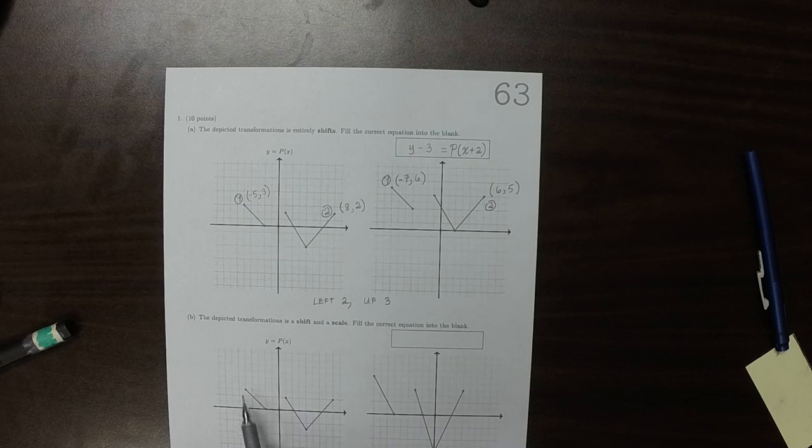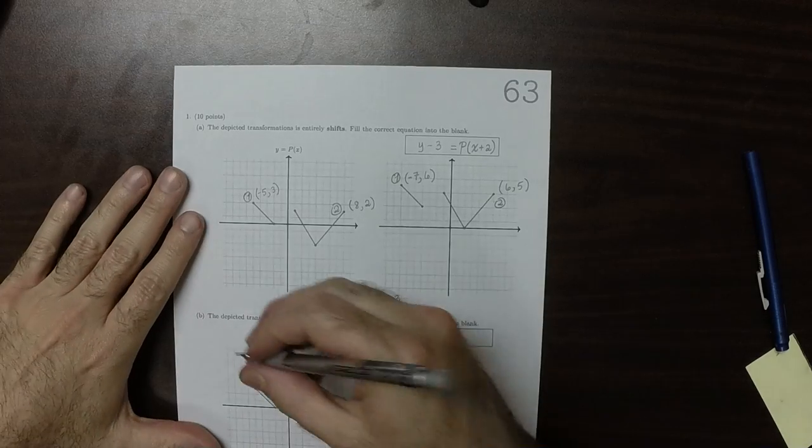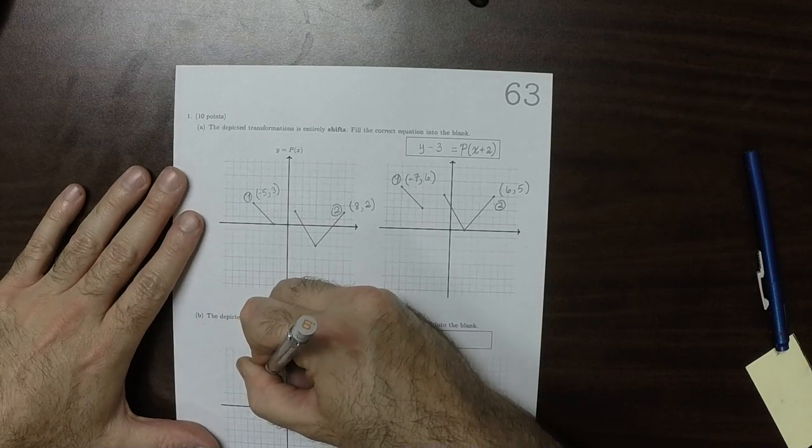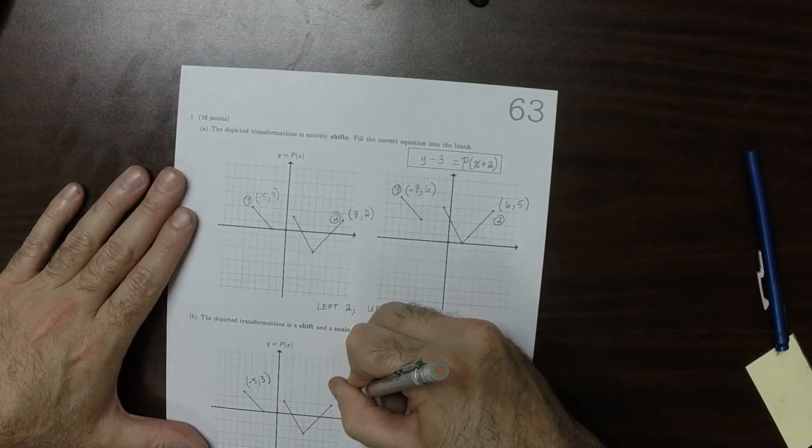So again, we have the same plot as before, except we're doing a different transformation. So this is still the point negative 5, 3, and this is still the point 8, 2.